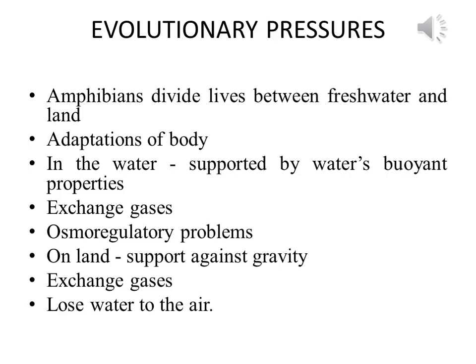Now let me discuss the evolutionary pressures on the amphibians. Most amphibians divide their lives between freshwater and land, and this divided life is reflected in body systems that show adaptation to both environments. In the water, amphibians are supported by water's buoyant properties, exchange gases with the water, and face the same osmoregulatory problems as freshwater fishes. On land, amphibians support themselves against gravity, exchange gases with the air, and tend to lose water to the air.